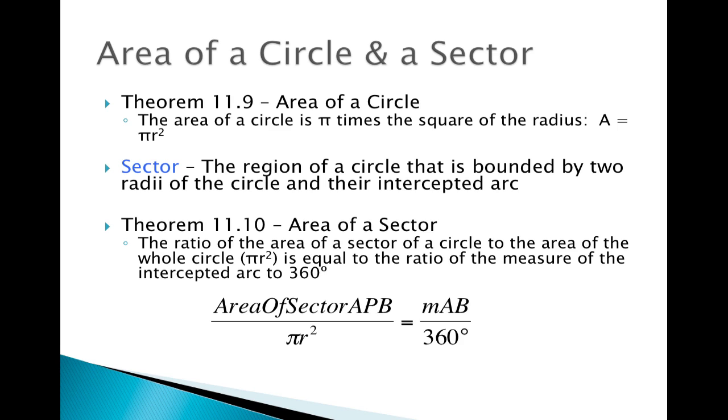Area of our sector APB, and we're going to use this circle right here, over the area of the circle equals the measure of arc AB over 360 degrees. So what that's saying is that if we were to shade this region right here, kind of color this in, we're finding the area of this region here.